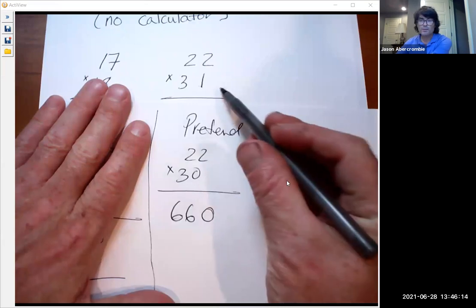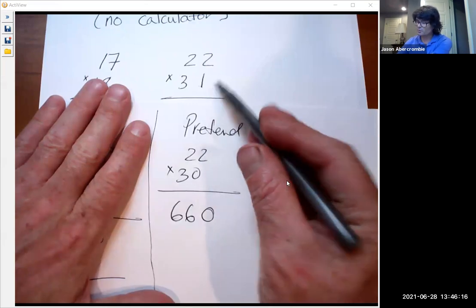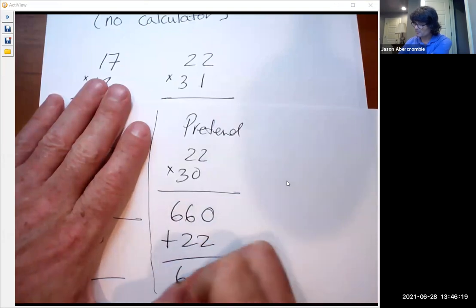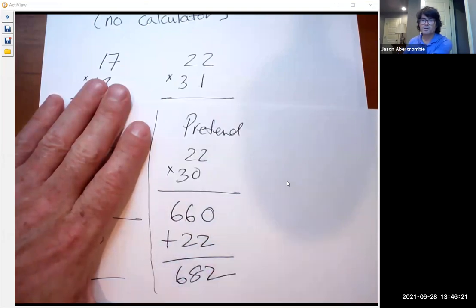We didn't actually have 30, we had 31. So we're going to take 1 times 22 and add it. 682. No problem.